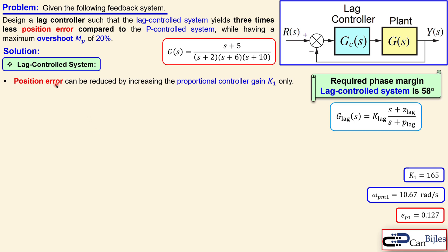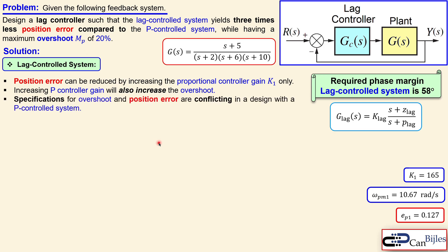The position error must be reduced by 3 times. It could be reduced by increasing K1 — which would also increase KP1 and reduce the position error — but that would also increase the overshoot. So we cannot decrease position error without increasing overshoot using only the P controller. The specifications for overshoot and position error are conflicting in a P control design for this problem. That is why we need the lag control system.